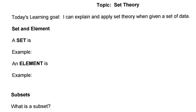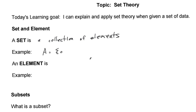It's called 'Set and Element.' A set is a collection of elements. Here's an example of a set. Every set I make, I always label with a capital letter. So an example of a set would be a set of colors: orange, green, and red.